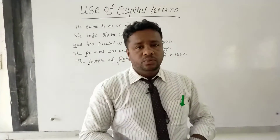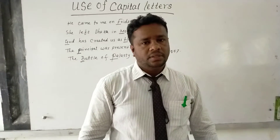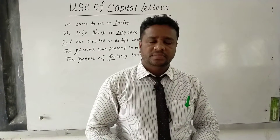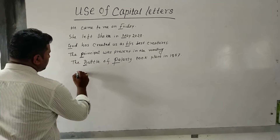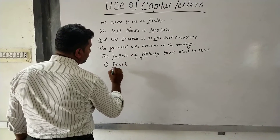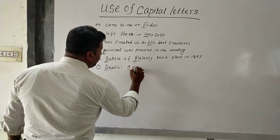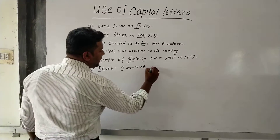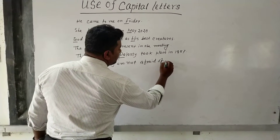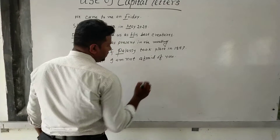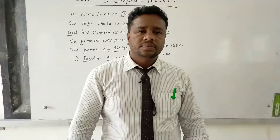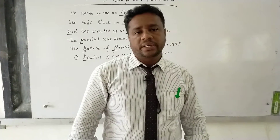Rule nine: capital letters are used for personified objects. Also, the names of books, journals, and newspapers begin with capital letters.